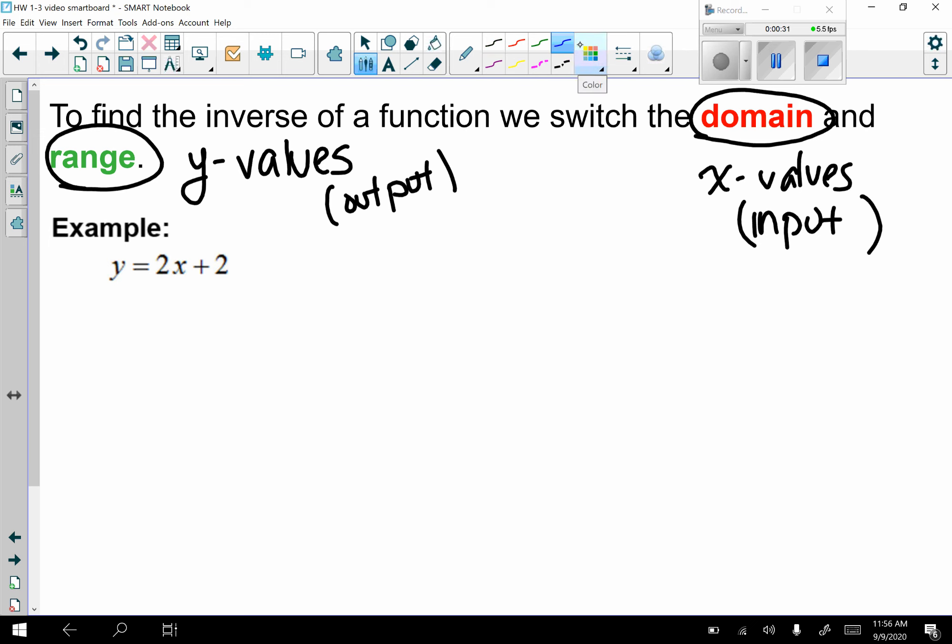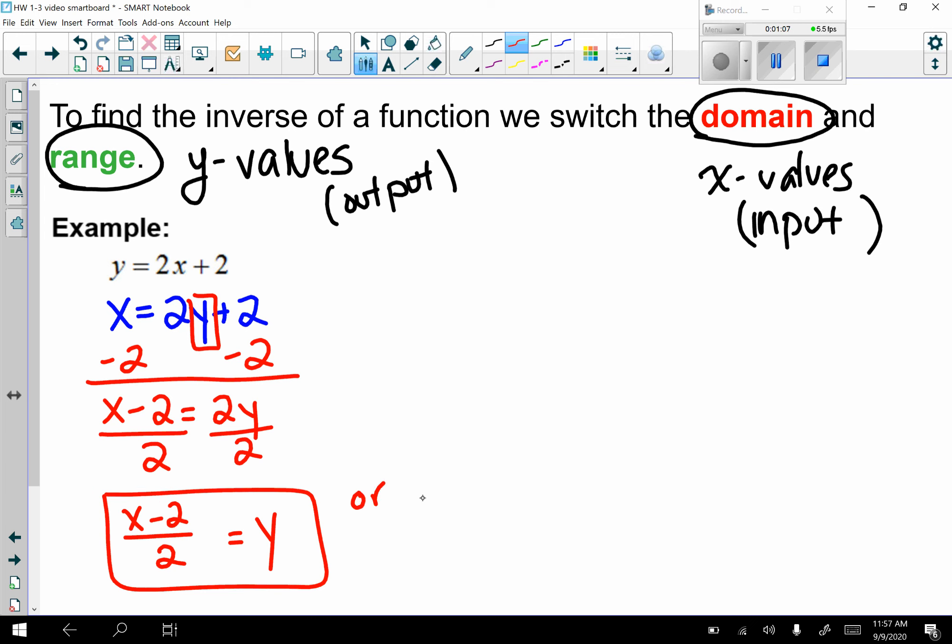We're going to work through an example and then we'll formalize and copy down some steps. y equals 2x plus 2. First thing is we're going to switch x and y because I'm switching my domain and range. x equals 2y plus 2. Now I'm going to solve for y. Subtract 2 on both sides. x minus 2 equals 2y. Divide by 2. y equals x minus 2 over 2. You could leave it like that, or we could make it y equals x over 2 minus 2 over 2, which would reduce to y equals x over 2 minus 1.